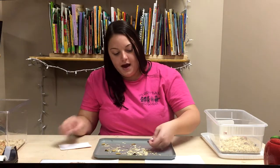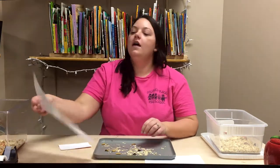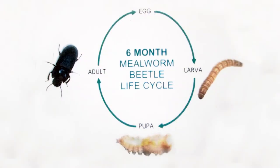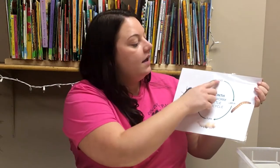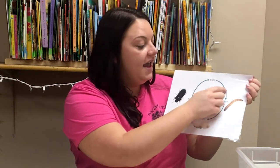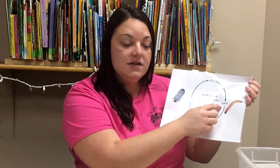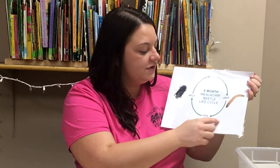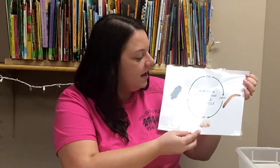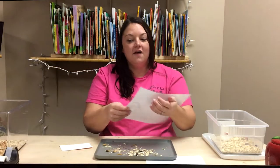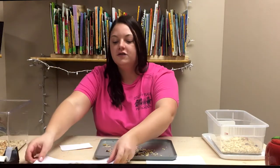Then we'll come back and revisit our chart, and I'll also show them a flyer about how in the beginning stages we have an egg, and that egg then turns into the larva which is the mealworm, which then turns into the pupa or cocoon, and then becomes the adult which is the beetle. So that's how I teach young children about the life cycle.